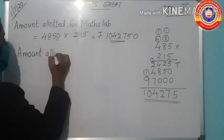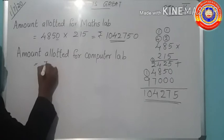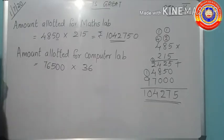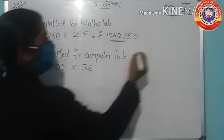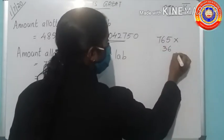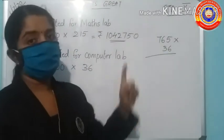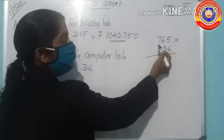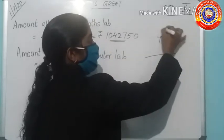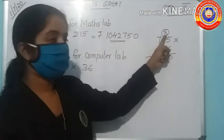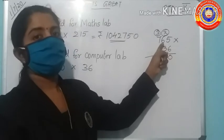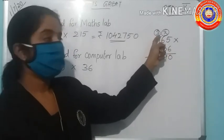Next, we have to find the amount allotted for computer lab. The amount allotted for 1 computer lab is 76,500, then for 36 computer labs, 76,500 into 36. After removing the 0s, what is the number here? 765 into 36. First, you have to multiply 6 with the above 3 numbers, 7, 6 and 5. Then 6 into 5 is 30, 3, 0, 3 carry. Then 6 into 6 is 36 plus 3, 39, write 9 here, carry over 3. Then 7 into 6, this is 42, 42 plus 3, this is 45. Write 45 here.